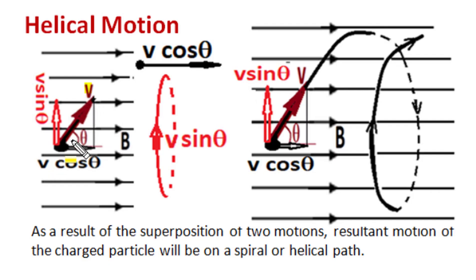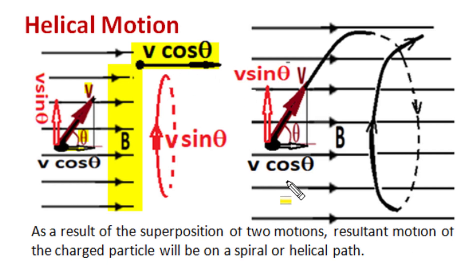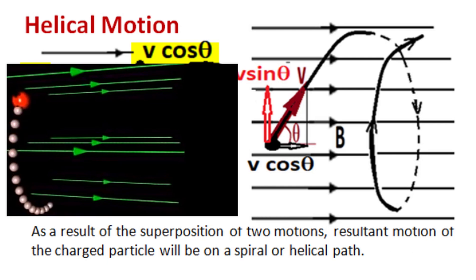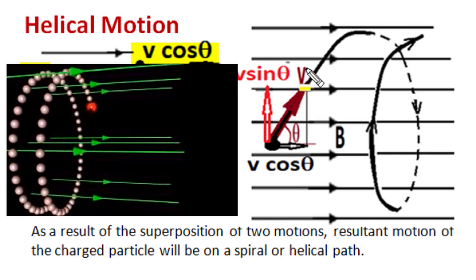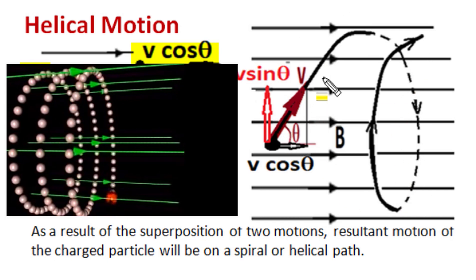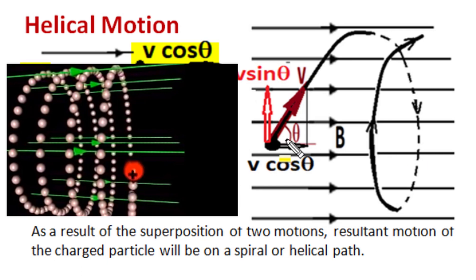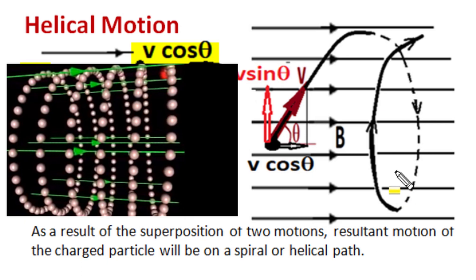So when the velocity vector of a charge particle makes an angle theta other than 0, 90, or 180 degrees with the magnetic field flux density, one component of velocity along the magnetic field proceeds in a straight linear direction with constant v cos theta velocity. The perpendicular component v sin theta produces circular motion. The combined action of both velocity components together produces helical motion — the particle not only makes circular motion but also moves in one particular direction, forming a spiral helical or helix path.